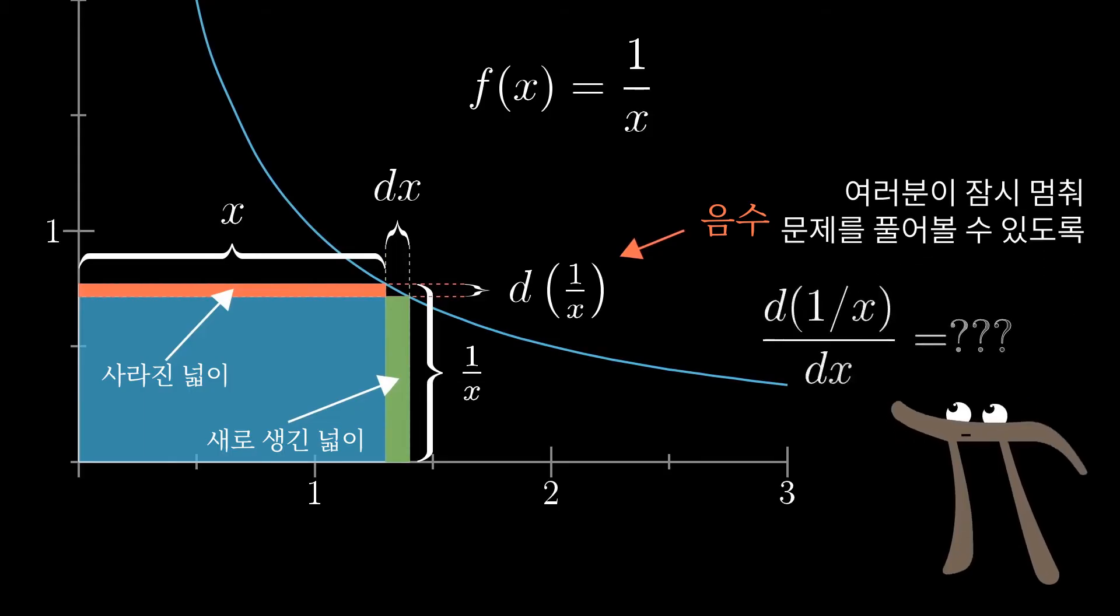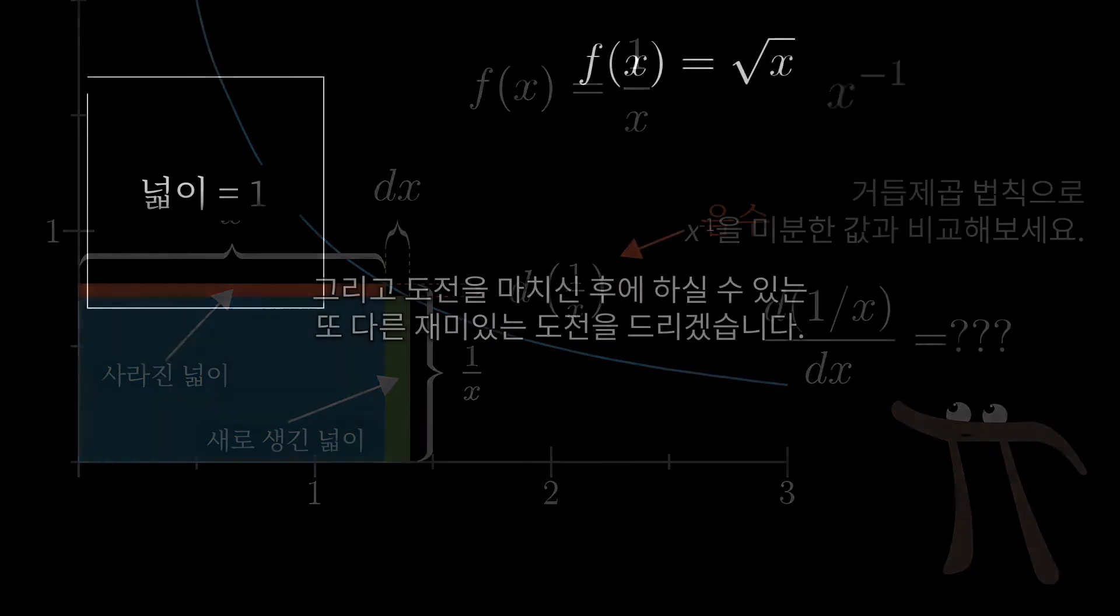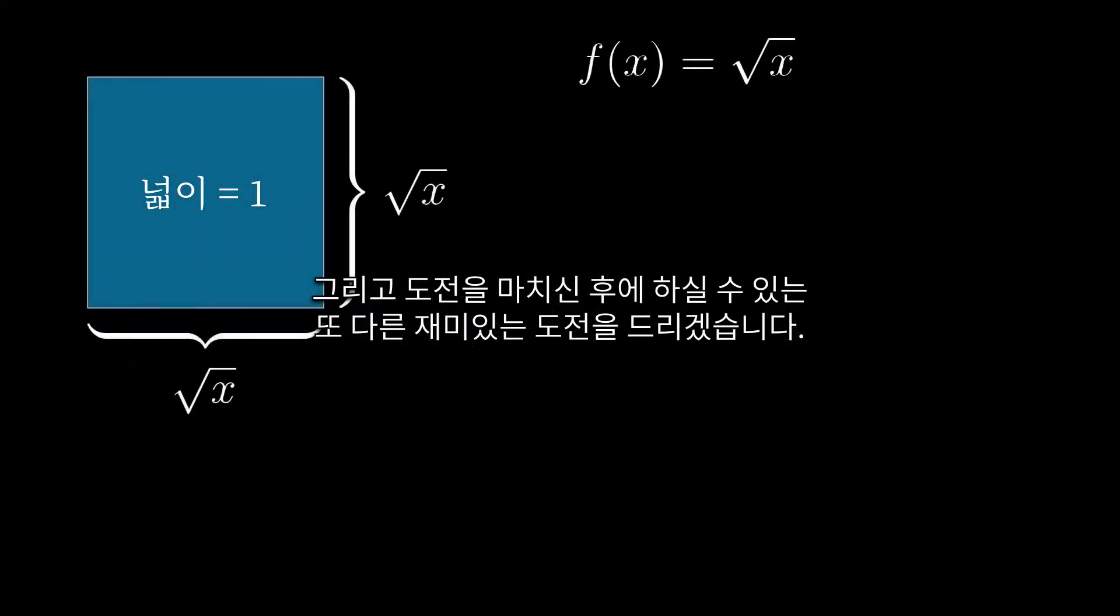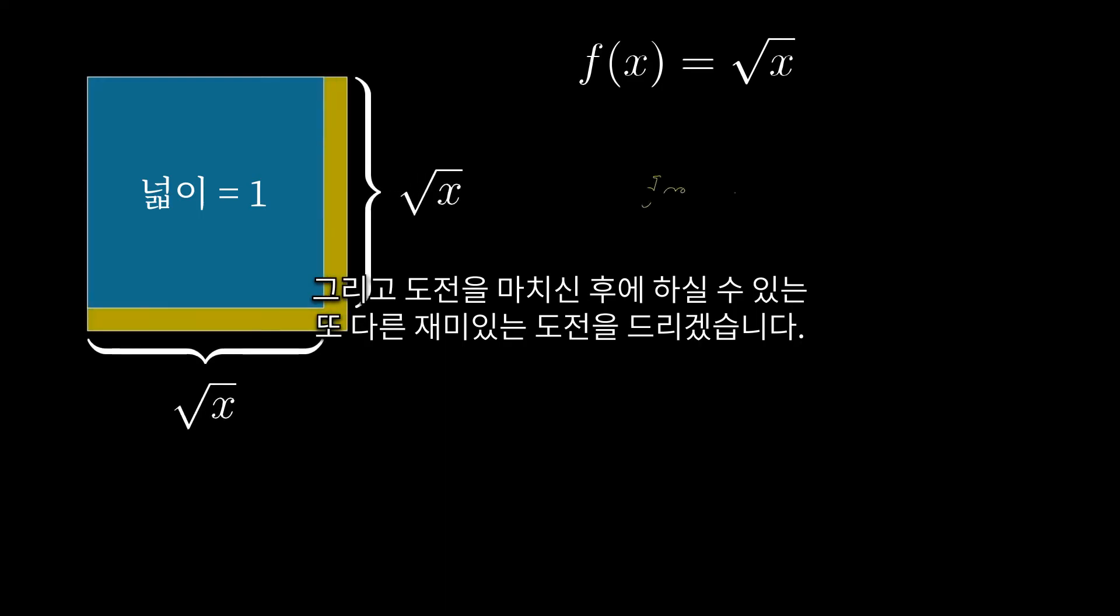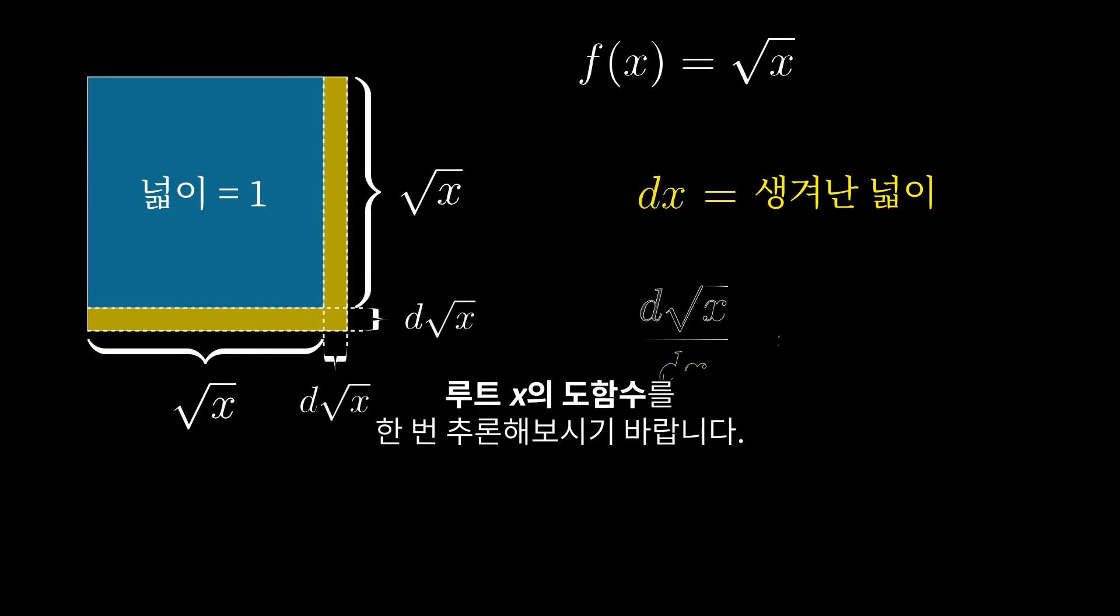And you know what? I'm going to leave the last few steps here for you, for you to pause and ponder and work out an ultimate expression. And once you reason out what d(1/x) divided by dx should be, I want you to compare it to what you would have gotten if you had just blindly applied the power rule, purely symbolically, to x to the negative 1. And while I'm encouraging you to pause and ponder, here's another fun challenge if you're feeling up to it. See if you can reason through what the derivative of the square root of x should be.